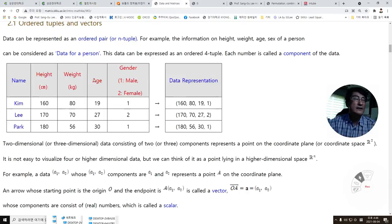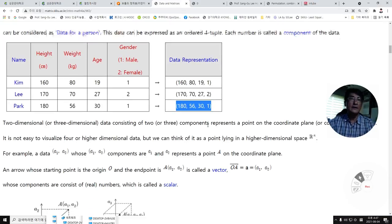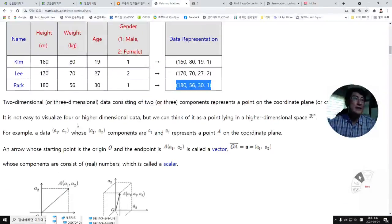In this table, Kim has a height of 160 cm, 80 kg, age 19, and male. This data can be written as a four-tuple like this. For Lee, this data, and for Park, this four-tuple.